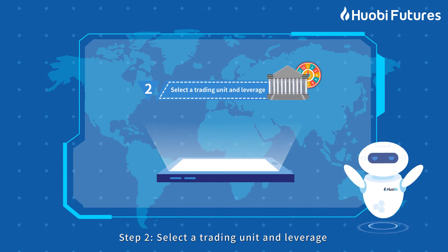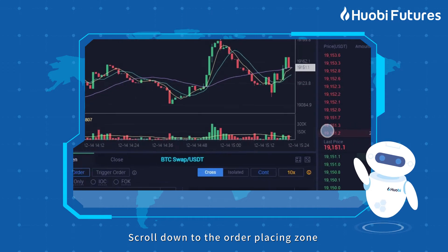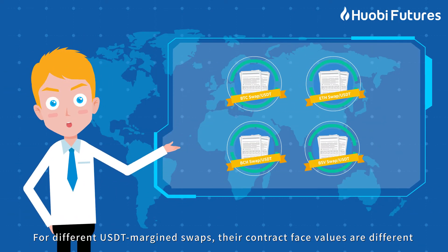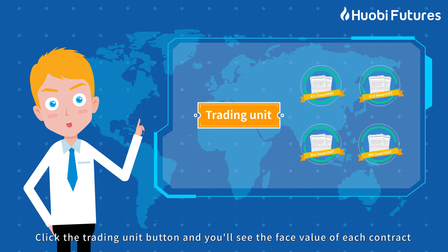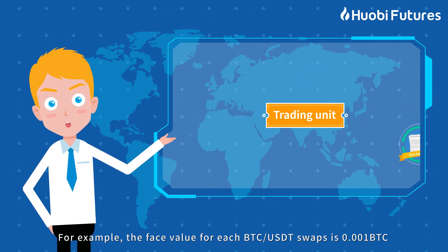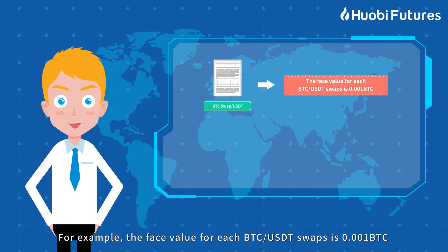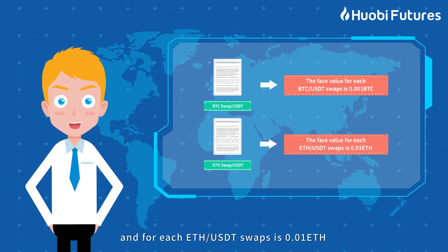Step 2: Select the Trading Unit and Leverage. Scroll down to the Order Placing Zone, then click to select Cont or BTC as the trading unit. For different USDT Margin Swaps, their contract face values are different. Click the Trading Unit button and you will see the face value of each contract. For example, the face value for each BTC USDT Swap is 0.001 BTC, and for each ETH USDT Swap is 0.01 ETH.